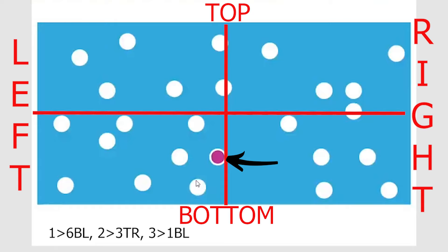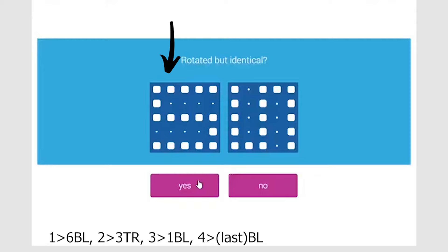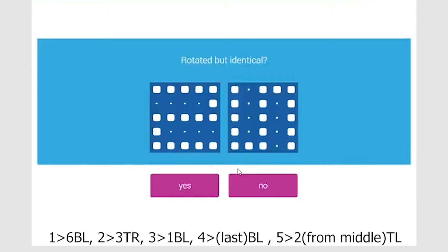Memory: dot in bottom left at last position — 'last BL.' Rotation: left image is number 5; moving right image 90° clockwise also gives 5 — yes, identical. Memory: dot in top left quadrant at second position from the center — since it's closer to the middle, I use the center border as the reference rather than the left border, giving position '2 center TL.' Rotation: left image is number 2; rotating right image 90° clockwise gives number 5 — mirror image but not identical — so no.